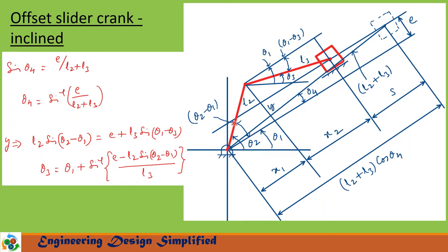In the extreme position, when L2 and L3 come in line, the slider will assume this position. In this position, the length from the crank center to the slider is L2 plus L3. The angle between this inclination and this line L2 plus L3 is theta 4. In this position, the height is E and the length is L2 plus L3. We form a right angle triangle, and from this triangle we can find theta 4 equal to sine inverse of E divided by (L2 plus L3).